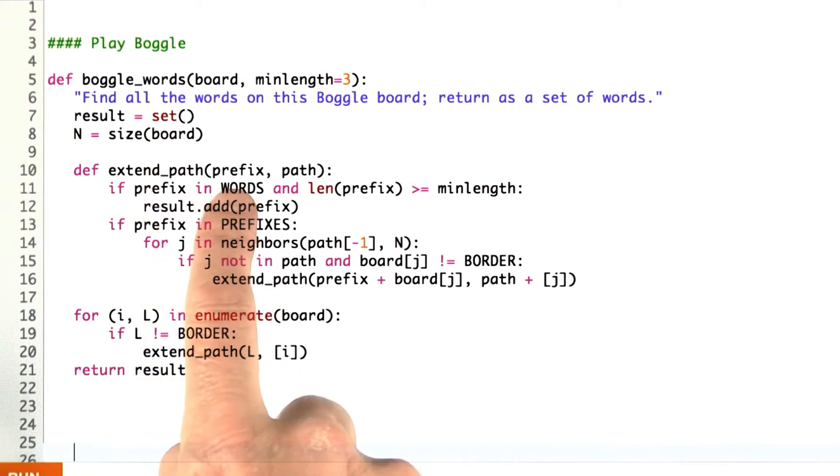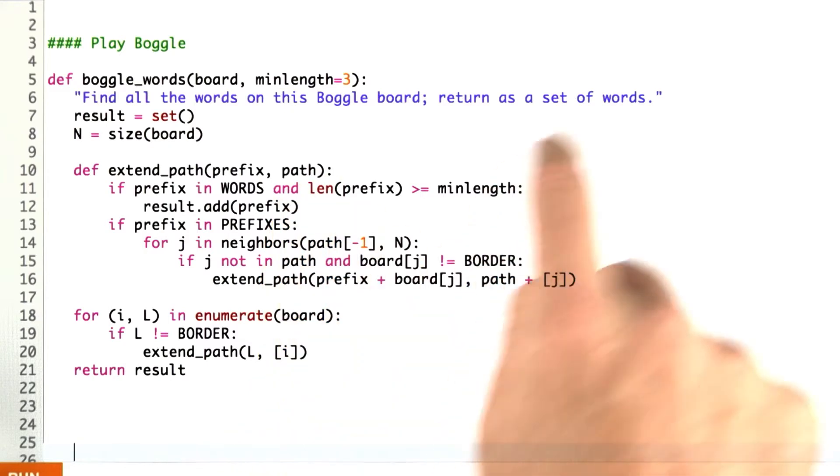So extend_path says I have a prefix so far, which may or may not be a word, and I have a path where a path is defined as a list of locations that I've visited so far. And I need that because I can't have a path circle back on itself. I can't use a location twice, so I need to know where I've been before.